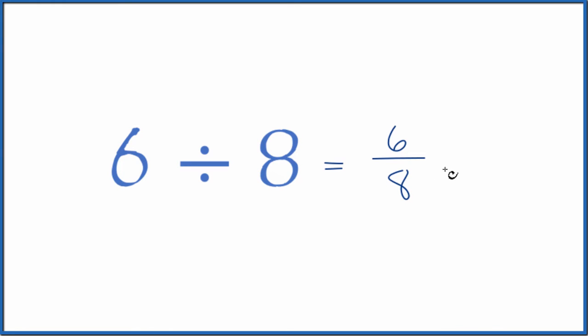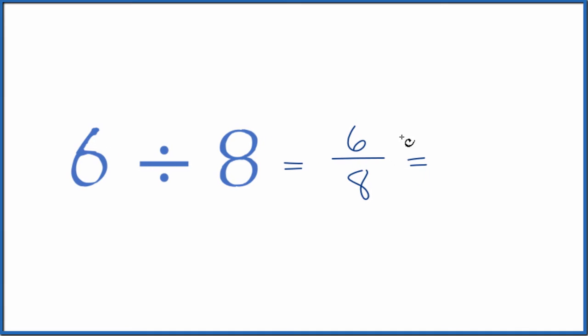And we could reduce that as well. If we divide the numerator and the denominator by 2, 6 divided by 2 is 3, 8 divided by 2 is 4. So 6 divided by 8 as a fraction is 6 eighths or 3 fourths.